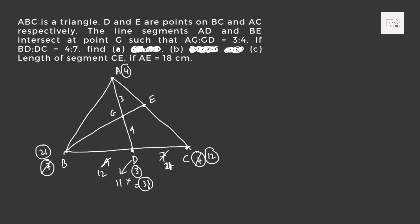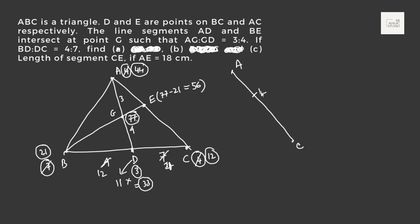Now D value becomes 33 and G value should be 44 + 33 = 77. Looking at line segment BE, G is the fulcrum and the total mass value is 77, and at B it is 21. That means at E it should be 77 − 21 = 56. Now if we look at line AC with fulcrum at E: mass at E is 56, A is 44, C is 12. We can check: 44 + 12 = 56. This triangle is now at the balancing position.